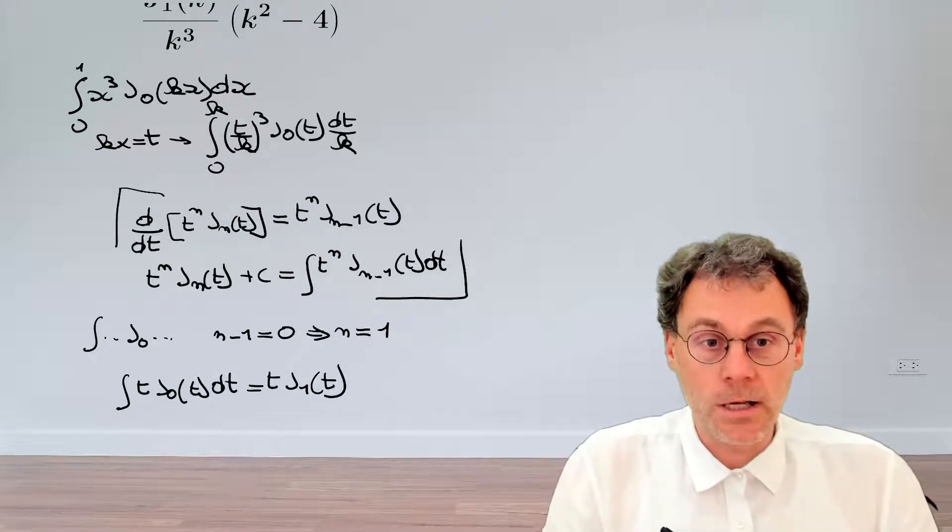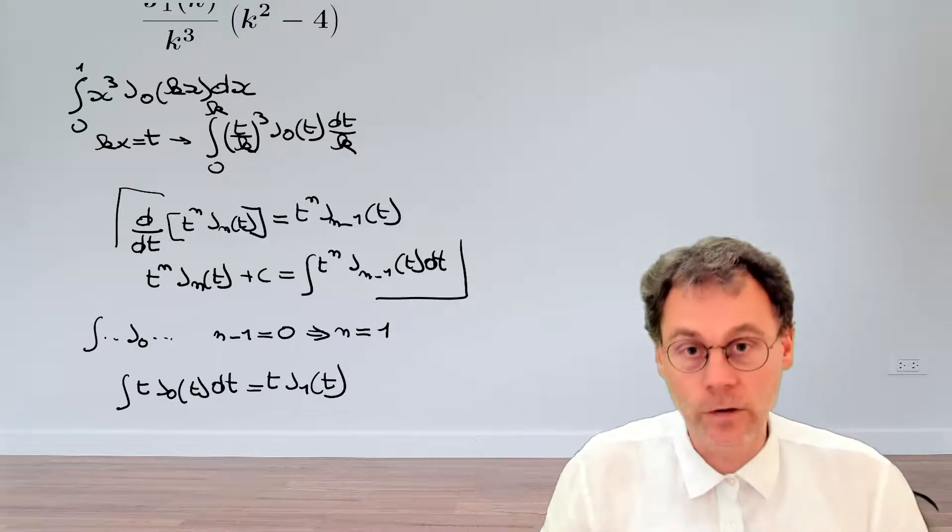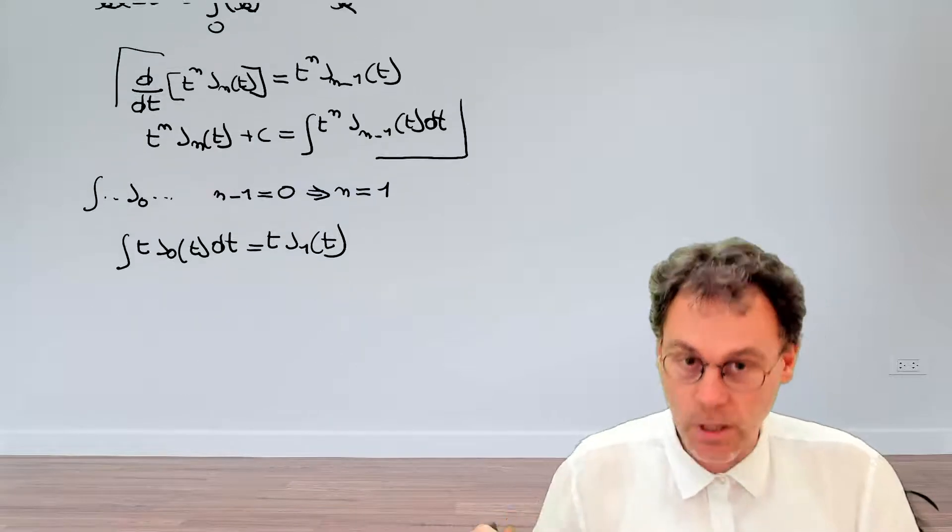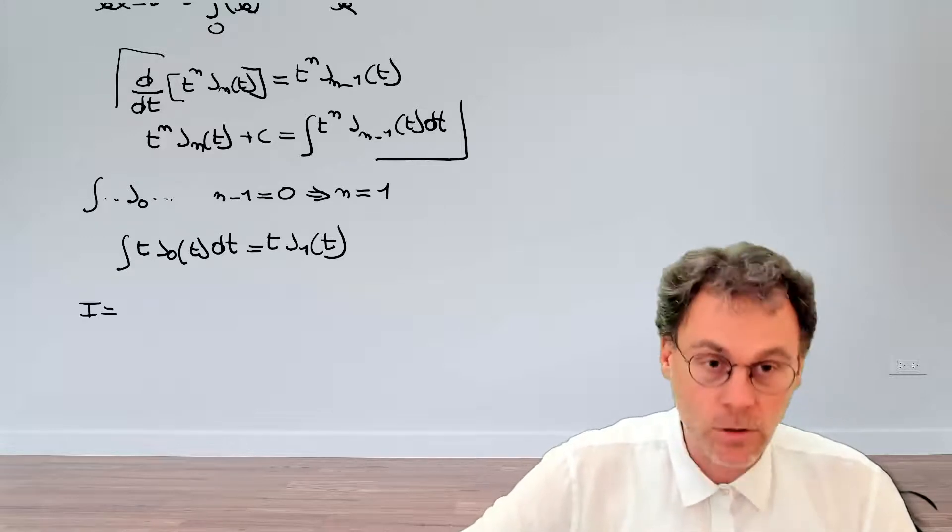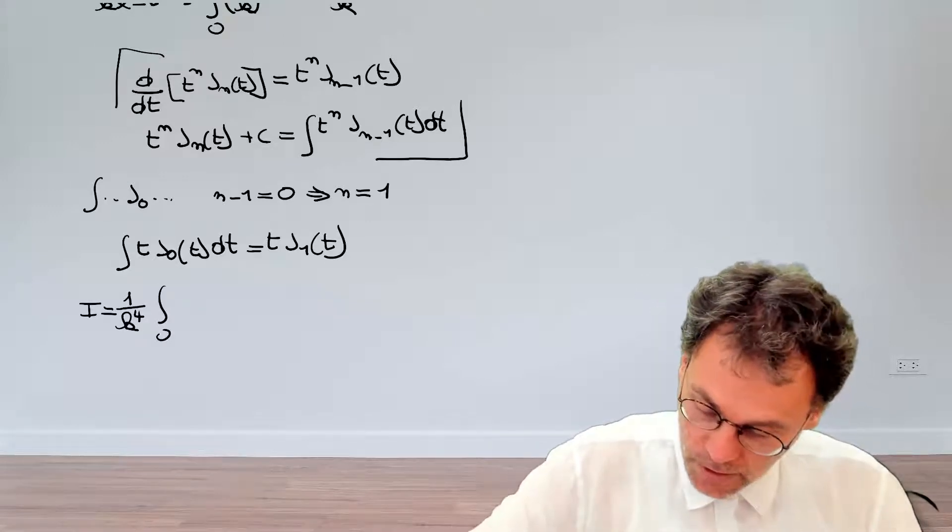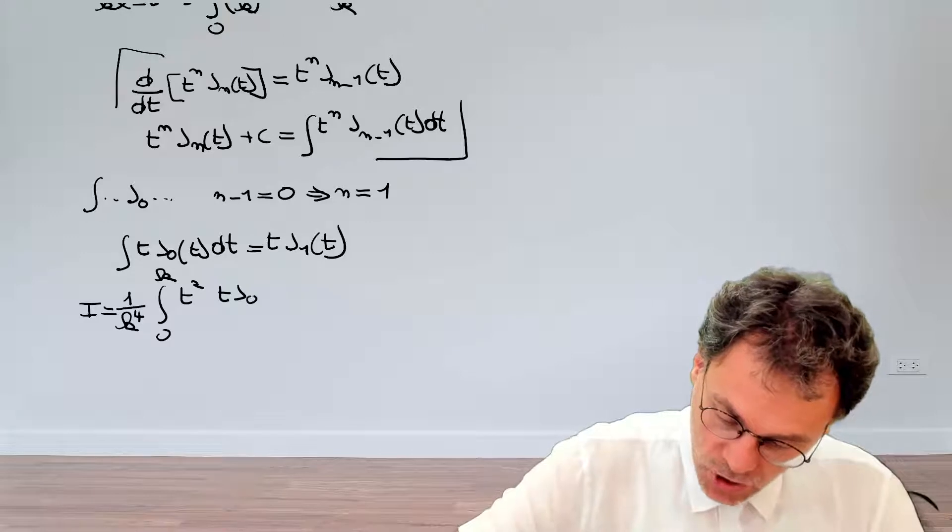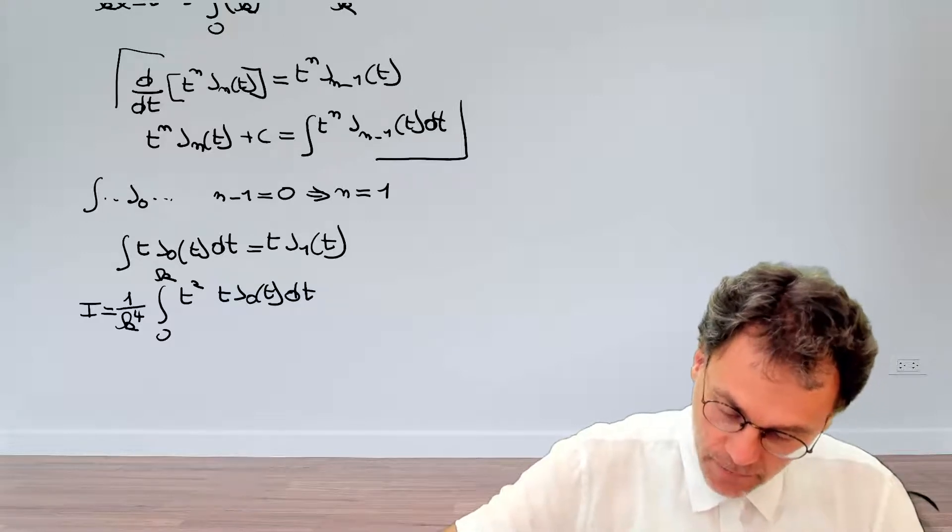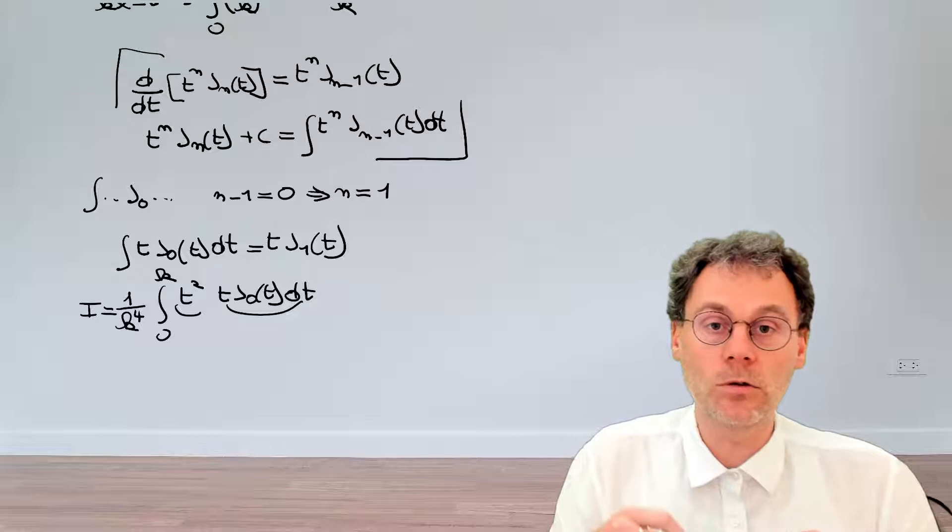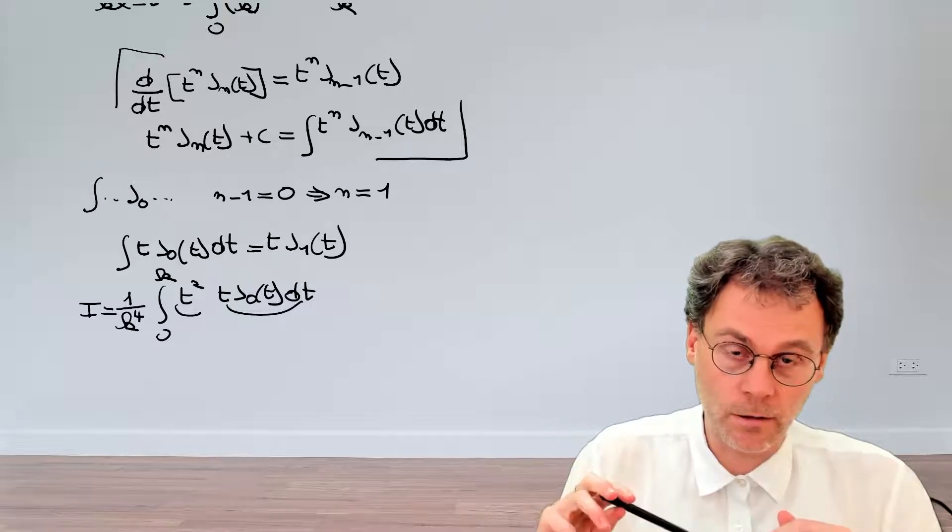So the answer obviously is an integration by parts. We just factor out our integrand into two factors. One of those we will be able to use that formula for. So we're going to write our integral: 1 over k^4, the integral from 0 to k. And then we split it up into t^2 and t J_0(t) dt. So two factors. One of them should be u and one of them should be dv. Which one is which?